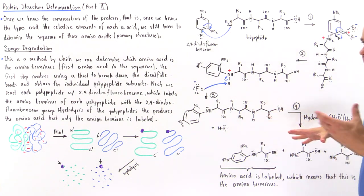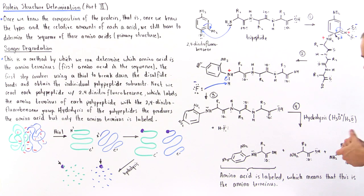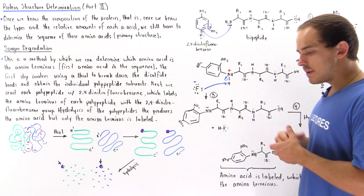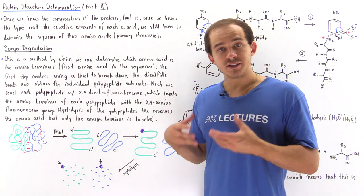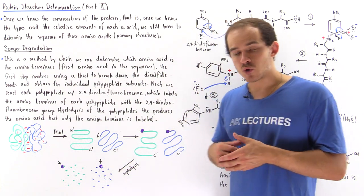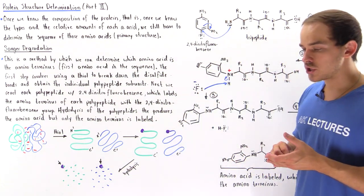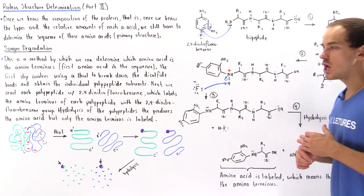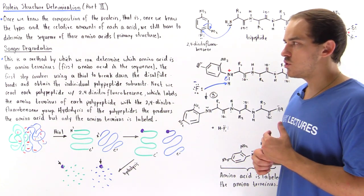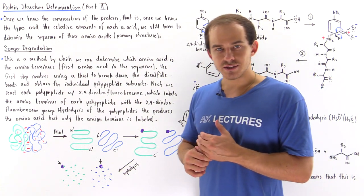In this lecture and the next series of lectures, we're going to discuss how we can determine what the primary structure is — that is, what the sequence of amino acids is.